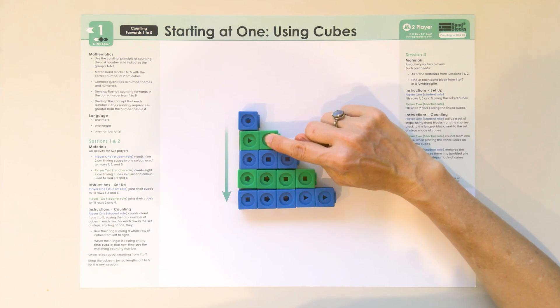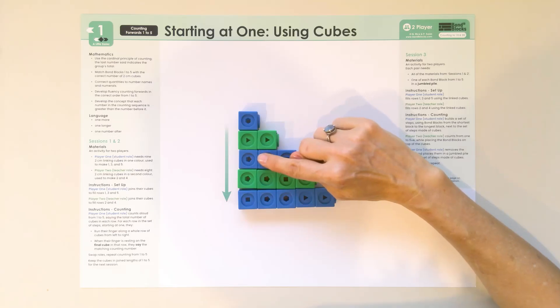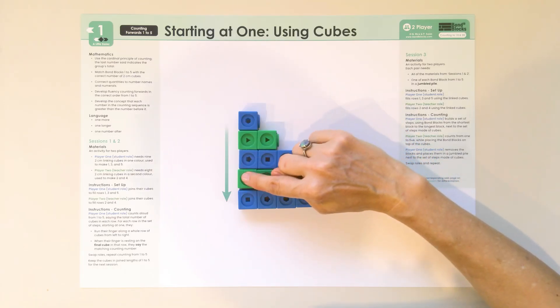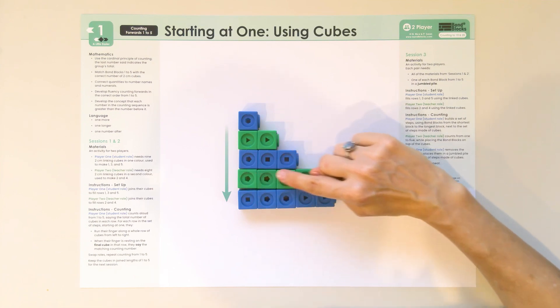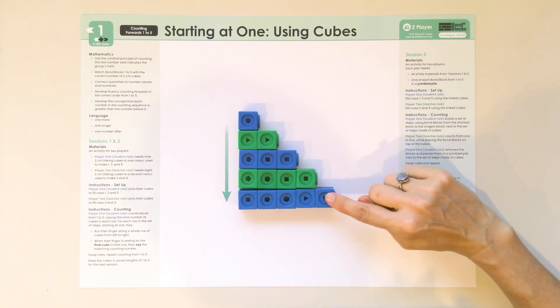When we're at the end of that row, we start on the next row, on the first cube, run our finger along the whole row, and say three. Start at the beginning. Four. Five.